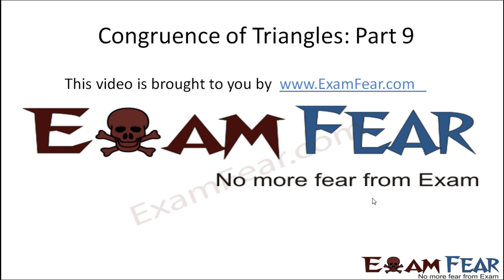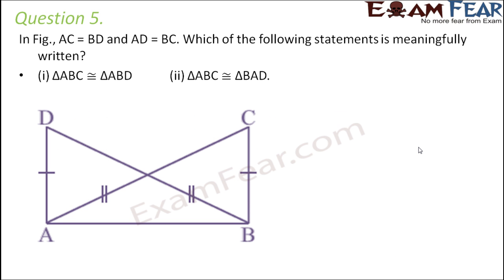Hello friends, this video on congruence of triangles part 9 is brought to you by examfear.com — no more fear from exam. Question number 5: in the figure, AC is equal to BD, and AD is equal to BC. Which of the following statements is more meaningfully written?